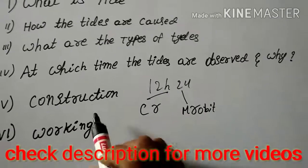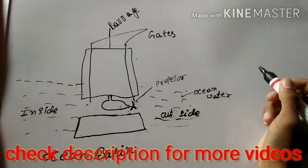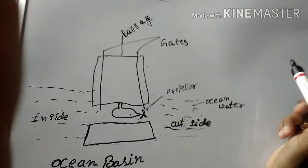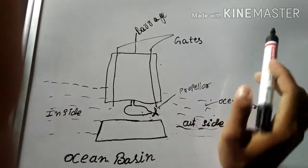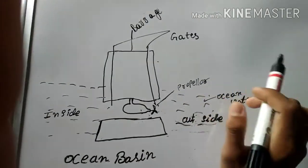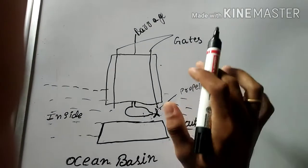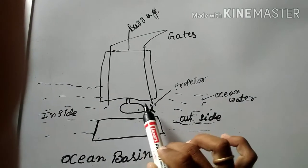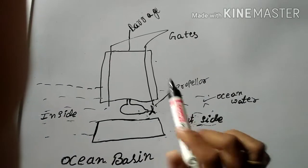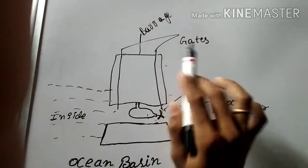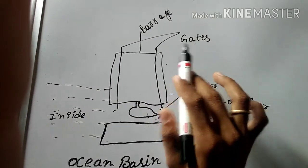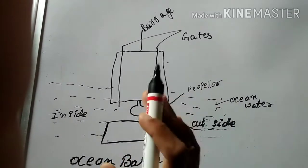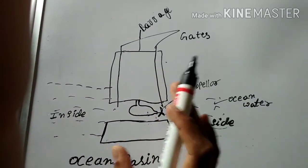Now let us discuss the construction of a tidal power plant. The construction starts by building a barrage in the ocean basin. The barrage consists of a turbine, and the turbine is attached to a propeller. At the same time, the barrage consists of two gates whose purpose is to open and close, or to control, the flow of water.